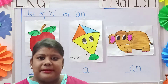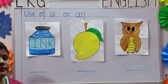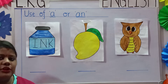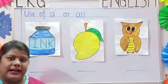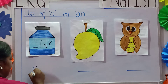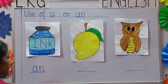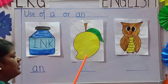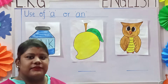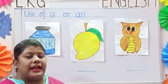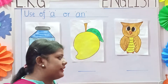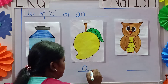Now let us see some more examples. Now see children, this is a picture of an ink pot. Ink pot starts with the letter I, so we will write 'an' — A, N — an ink pot. Now see the next picture. It is a picture of a mango. Mango starts with the letter M, and M is a consonant, so we will write 'a' — a mango.